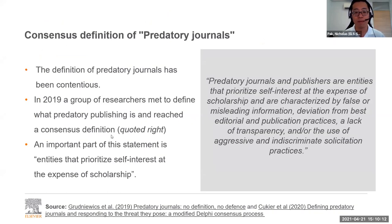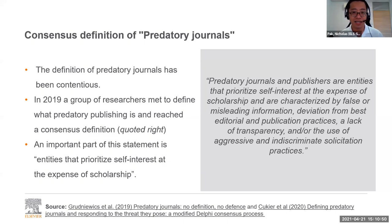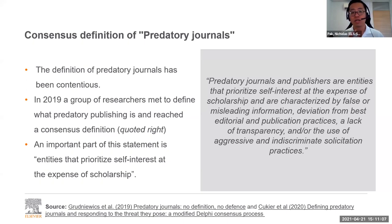Predatory journals and publishers are entities that prioritize self-interest at the expense of scholarship. They are characterized by false or misleading information, deviation from best editorial and publication practices, a lack of transparency, and the use of aggressive and indiscriminate solicitation practices. When looking for a journal to publish in, ask yourself: does it have high standards? Is the editorial process clear? Is there transparency? Did they aggressively ask you to publish while promising a peer review period of one week?